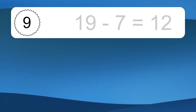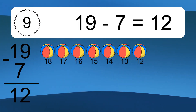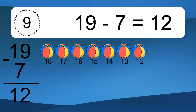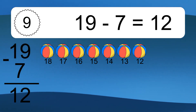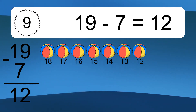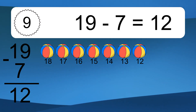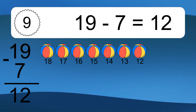19 minus 7 equals what? 19 minus 7 equals 12. Let's count it: 18, 17, 16, 15, 14, 13, 12.